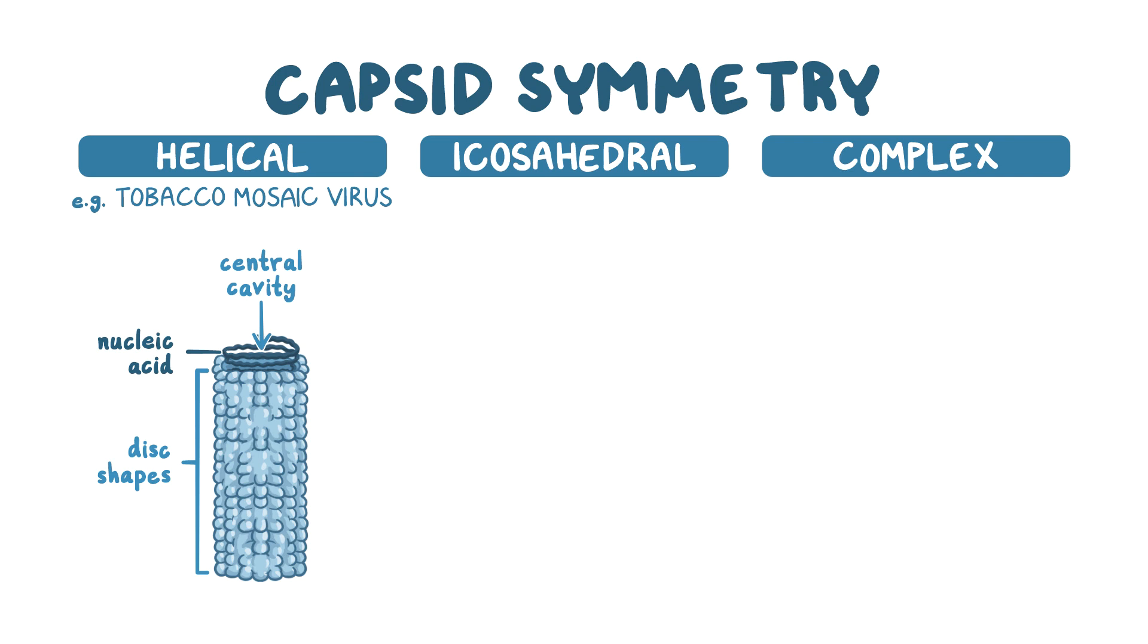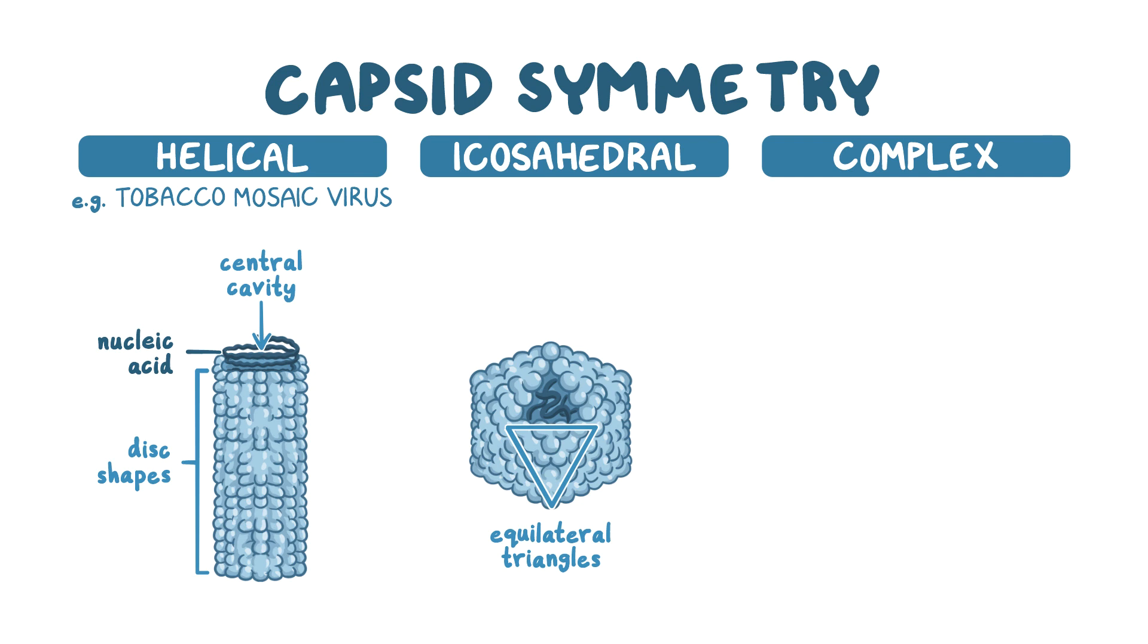Moving on to the icosahedral viruses, which are made up of equilateral triangles fused together in a spherical shape that fully encloses the genetic material. These viruses are released into the environment when the cell dies, breaks down, and lyses, thus releasing the virions. Some examples of icosahedral viruses include poliovirus, rhinovirus, and adenovirus.